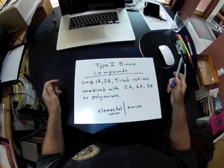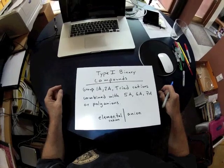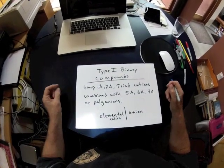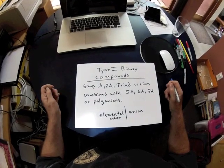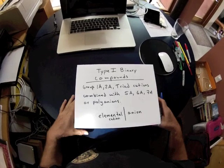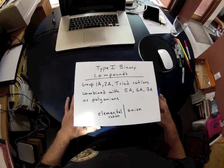Welcome to the first video in the series on the naming of ionic compounds. There are basically two categories of ionic compounds: type 1 binary compounds and type 2 binary compounds. This video focuses on the naming of type 1 binary compounds.